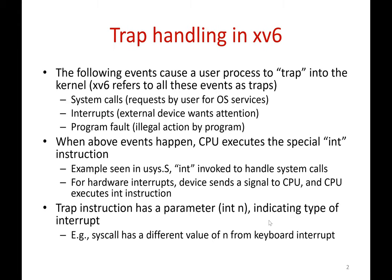So what is a trap? For most of the time, the CPU executes user programs. But when certain events happen, the user program traps into the operating system or the kernel code. These are called traps whenever the OS needs to be invoked. The first kind of trap is system calls. Whenever a user requests the operating system for certain services — say, to open a file or read a file — the user makes a system call to the operating system. That is a trap.